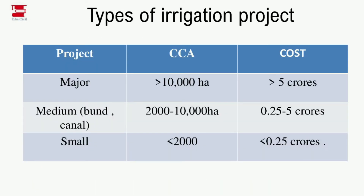Now, types of irrigation projects — this is very important. We are going to classify the project into Major, Medium, and Small. There are two criteria for classification: one is the CCA (Cultural Command Area) and the other is the cost.